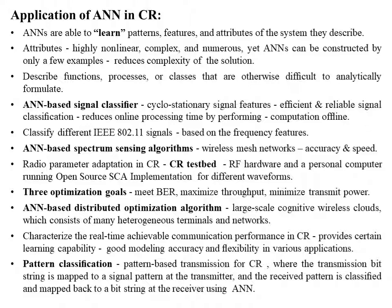Further, artificial neural networks have also been used for radio parameter adaptation in cognitive radio. A cognitive radio testbed has been developed using Tektronix test equipment as RF hardware and a personal computer running open-source SCA implementation for different waveforms. The ANN determines radio parameters for given channel states with three optimization goals: meeting the bit error rate, maximizing throughput, and minimizing transmit power. An ANN-based distributed optimization algorithm has been proposed for large-scale cognitive wireless cloud consisting of many heterogeneous terminals and networks. ANN is also used to characterize real-time achievable communication performance in cognitive radio, providing learning capability exploitable by the cognitive engine.